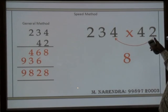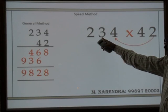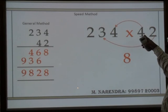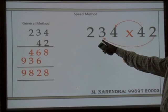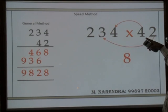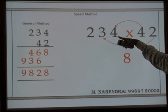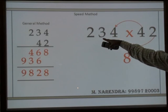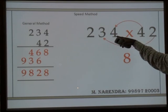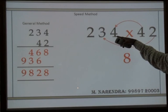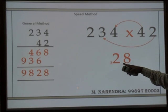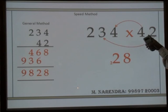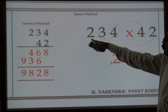Next: 2 into 3, plus 4 into 4. So 2 into 3 is 6, plus 4 into 4 is 16. Six plus sixteen is twenty-two.